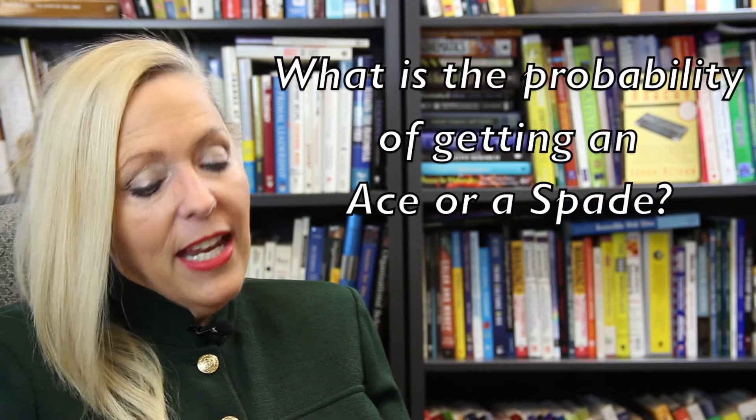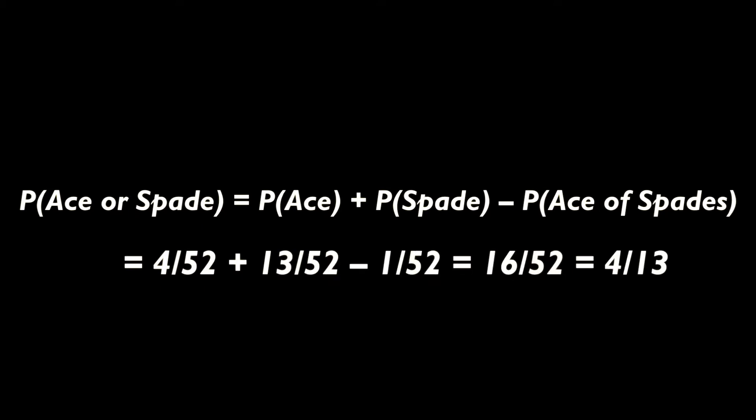Now, what is the probability of getting an ace or a spade? Notice, in this case, there is a card that is both an ace and a spade. So, the probability of an ace or a spade equals the probability of an ace plus the probability of a spade minus the probability of the ace of spades, which was counted twice. And you cannot count any card twice.